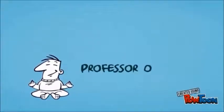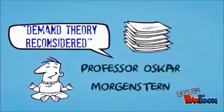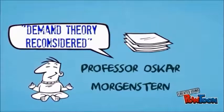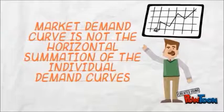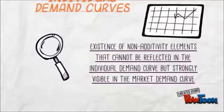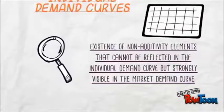The first inquiry to add such other utility determinants into our demand function was suggested by Professor Oskar Morgenstern in his article, Demand Theory Reconsidered. He concluded that after examining the relationship between individual demand and collective demand curves, in some cases the market demand curve is not the horizontal summation of the individual demand curves, because of the existence of non-additivity elements not reflected in the individual demand curve but strongly visible in the market demand curve.